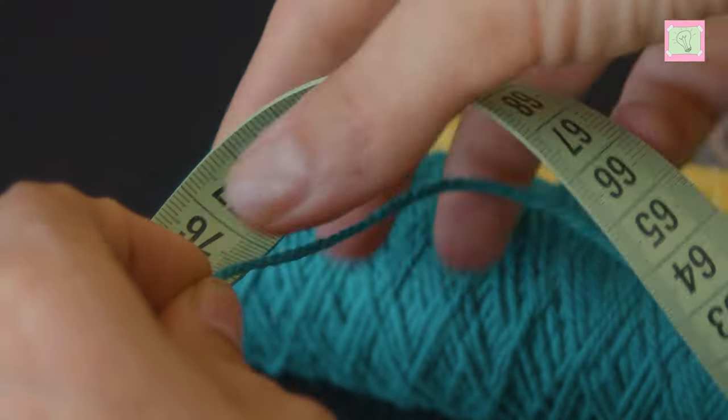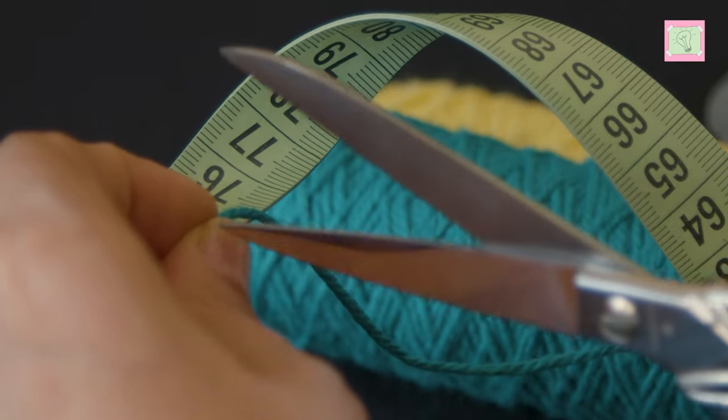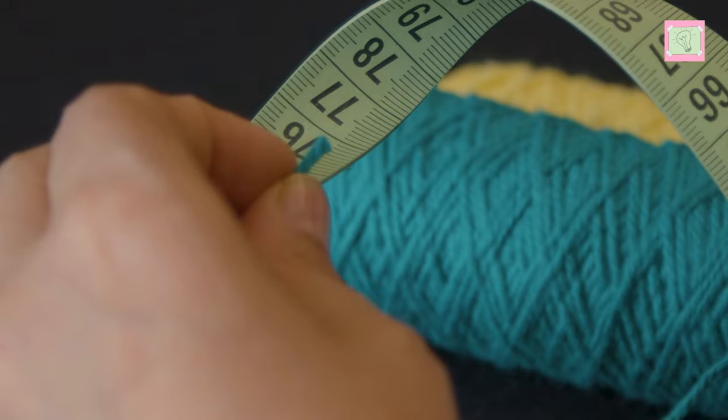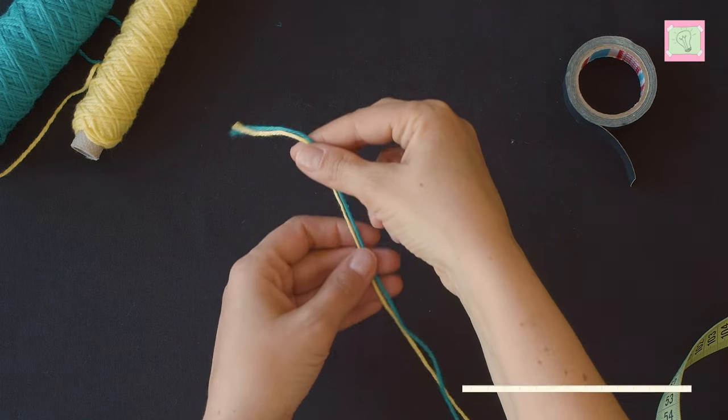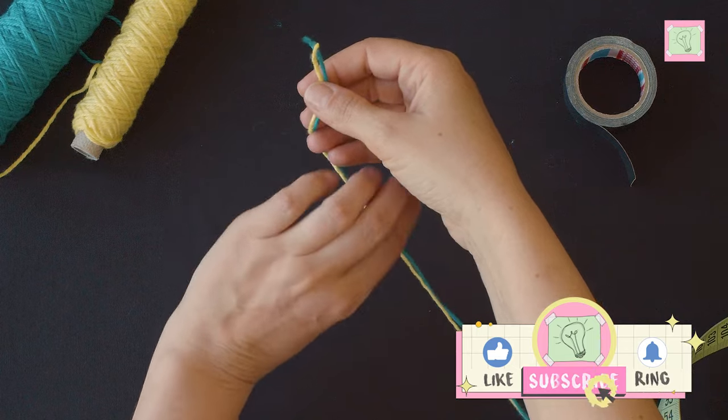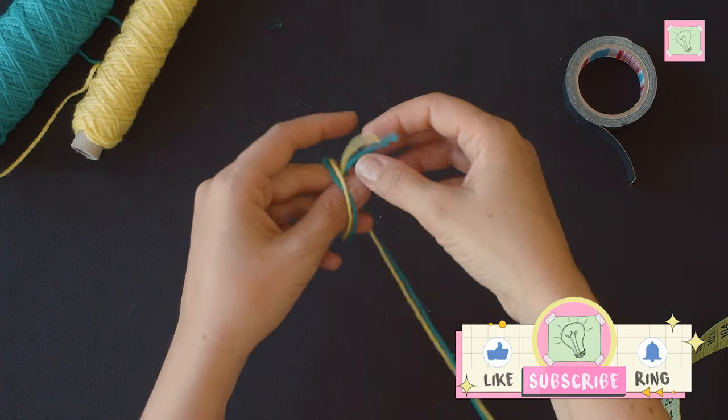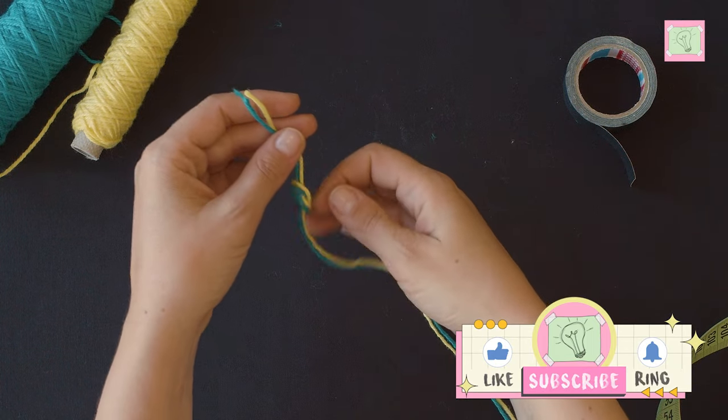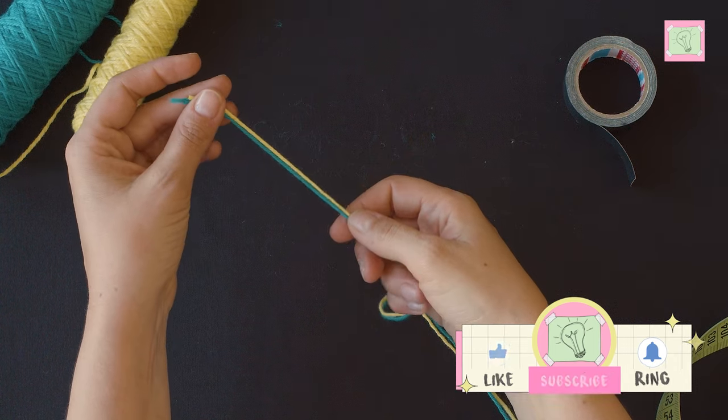First you cut off two threads, each of which should be about 75 cm or 30 inches long. Place the ends of the threads exactly on top of each other. Knot them together at about 10 cm or 4 inches from their ends.